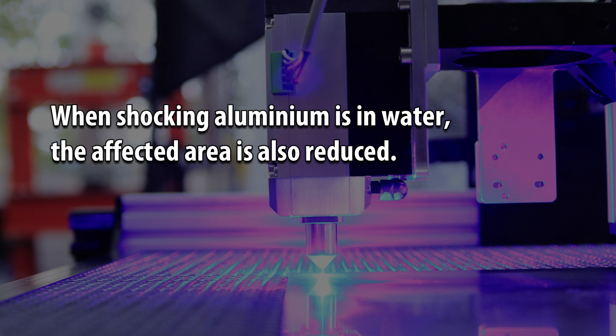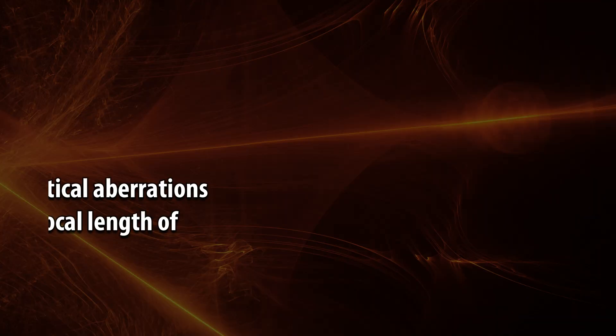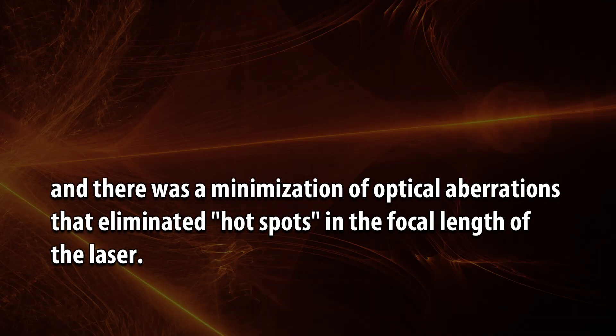When shocking aluminum in water, the affected area is also reduced. After laser-induced breakdown spectroscopy (LIBS) in water, the surface roughness decreased from 1.68 to 0.53 micrometers, and there was a minimization of optical abrasions that eliminated hot spots in the focal length of the laser.